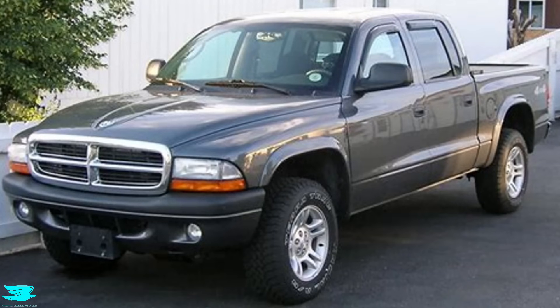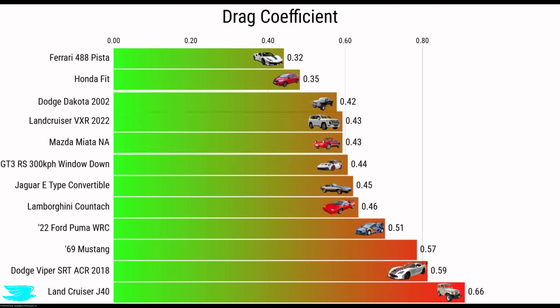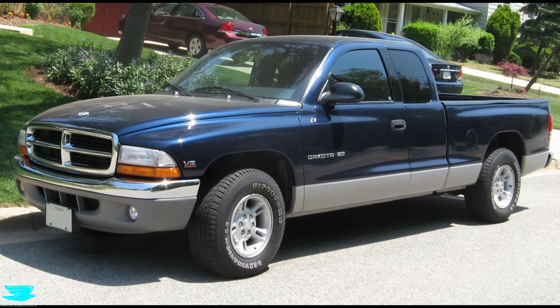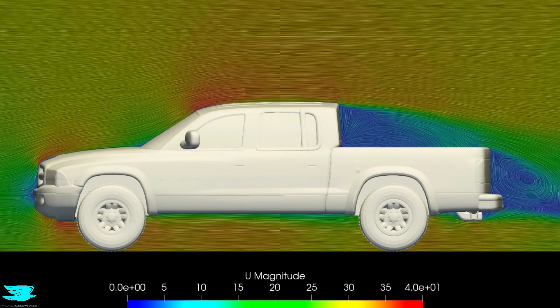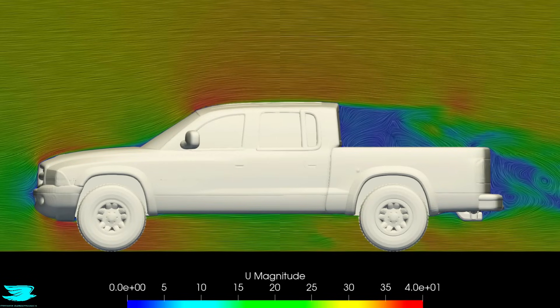So overall, the Dodge Dakota is pretty good. Obviously being a pickup truck, it has a very bad drag coefficient coming at 0.44, but that's only because of a few key regions that are performing really badly. The bed itself, the side mirrors and the large wheelhouses. Changing just those few things would drop the drag a lot. And Dodge did a good job with the roofline. It almost gets the flow angle perfect, but just a little short.